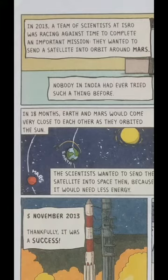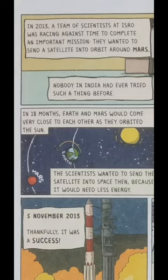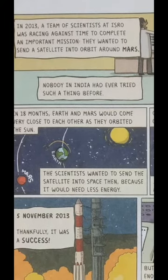So students, in 2013 a team of ISRO — the full form of ISRO is Indian Space Research Organization, meaning Bharatiya Antariksh Anusandhan Sangathan — was working on a mission to Mars. They wanted to send a satellite called Mangal into orbit around Mars. Nobody in India had ever tried such a thing before.